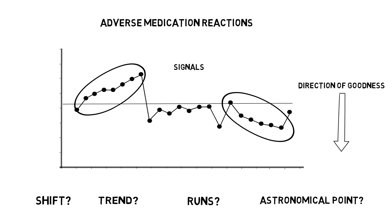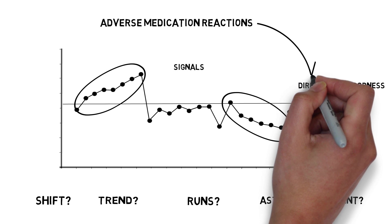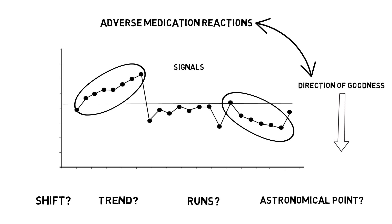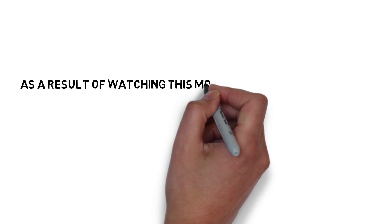The direction of goodness will depend on the measure that has been charted, and whether an increase or a decrease is considered an improvement. For example, the direction of goodness for cancer screening rates would obviously be up, but the direction of goodness for reported adverse medication reactions would be down.